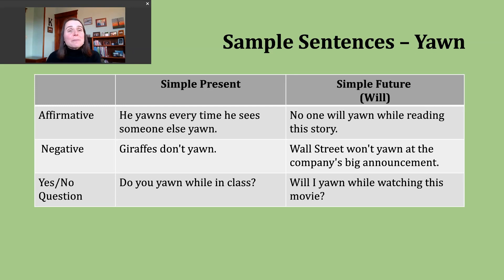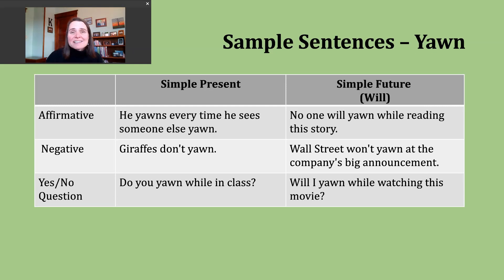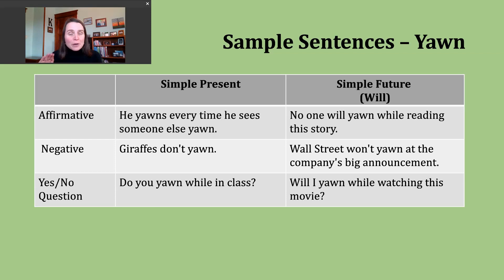We can move on and do a little verb tense practice with our verb of the day. Today, we're going to talk about the simple present and the simple future. We use the simple present to talk about our habits and routines — actions that repeat again and again — and also to talk about facts. In affirmative or positive sentences, if the subject is I, you, we, or they, you just use the base verb with no special endings — no suffix.